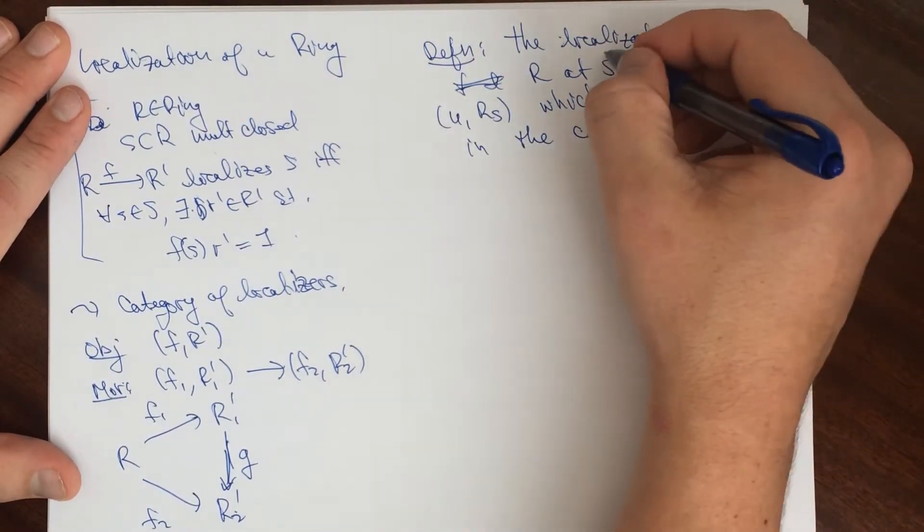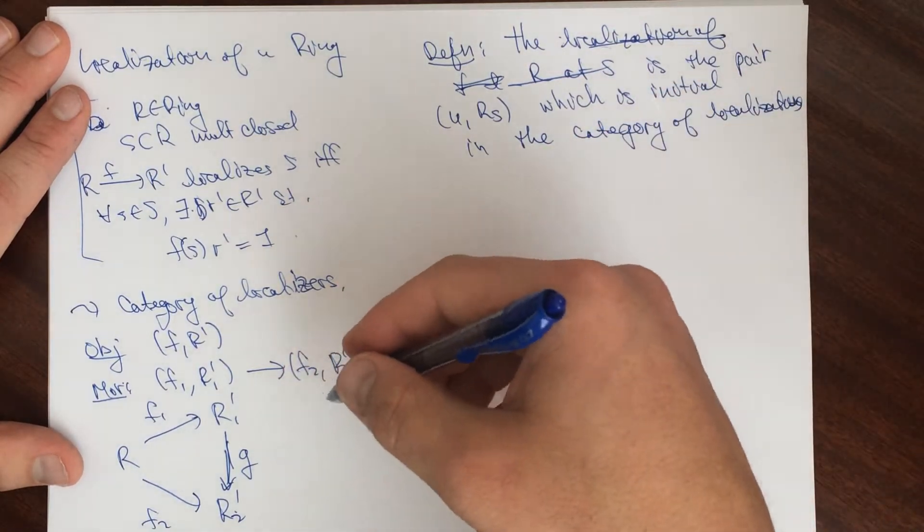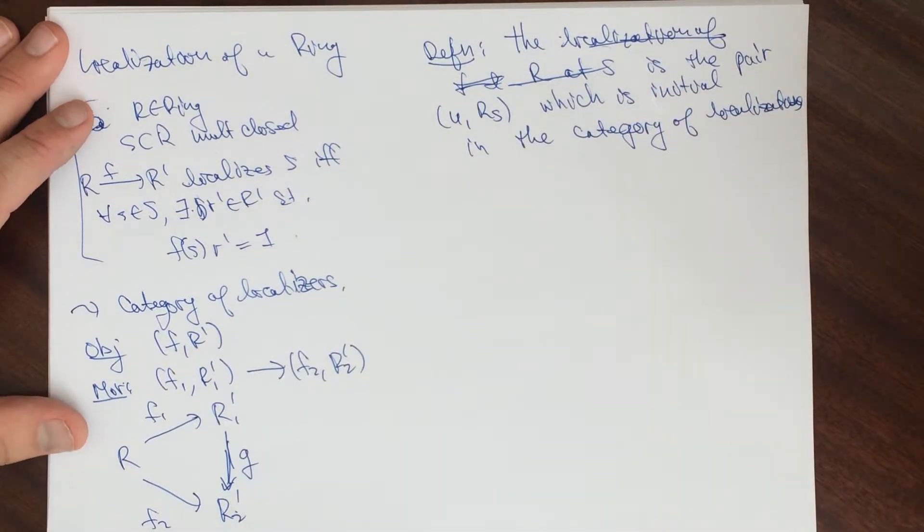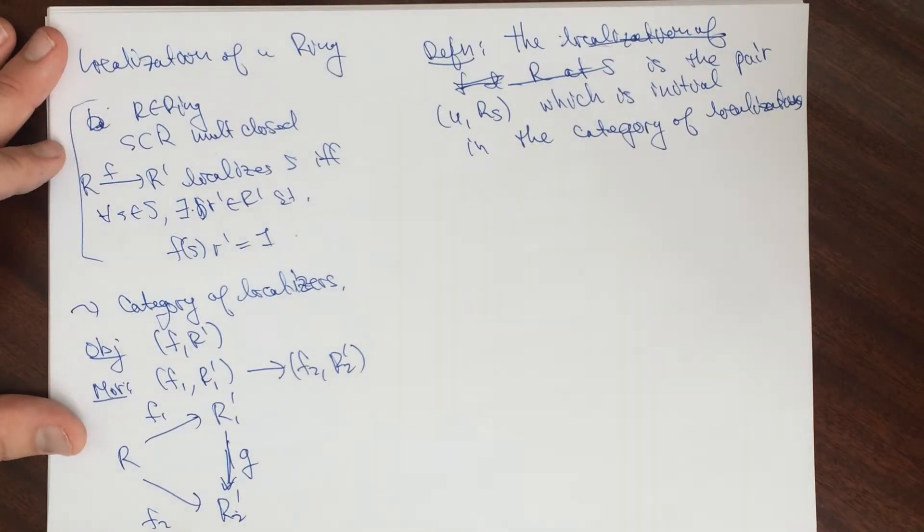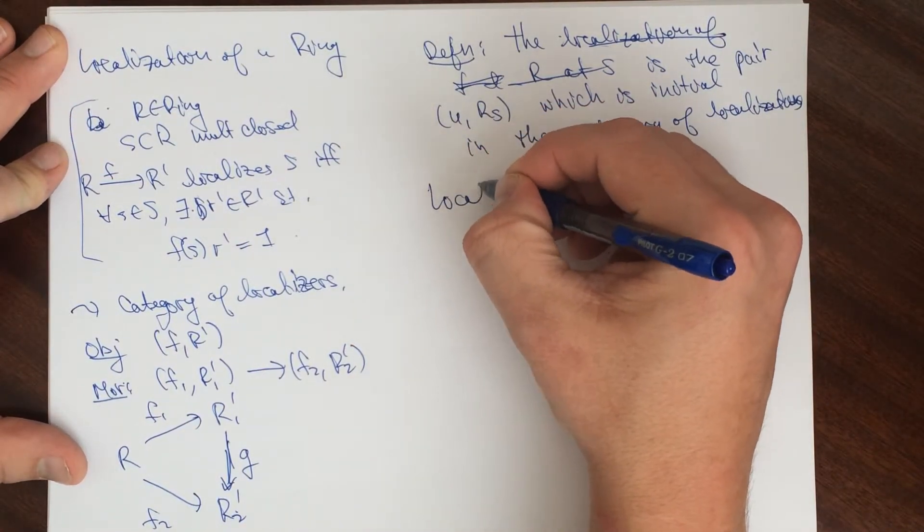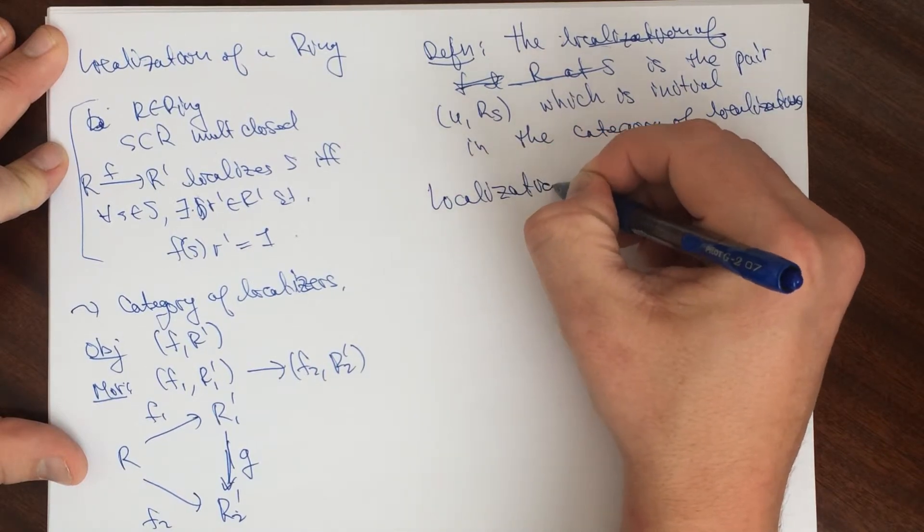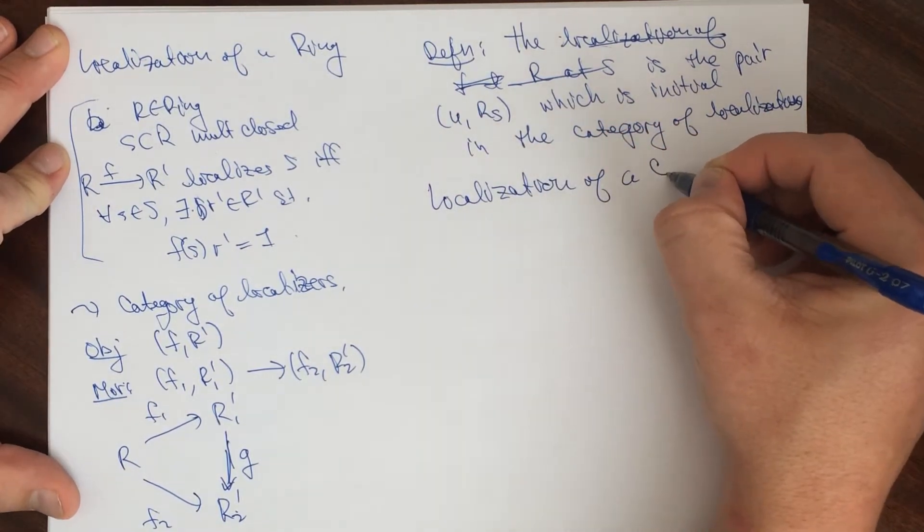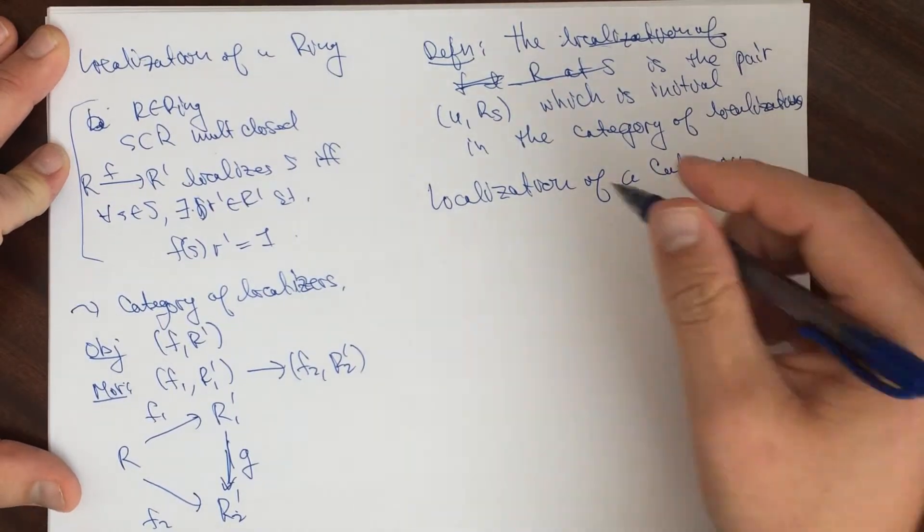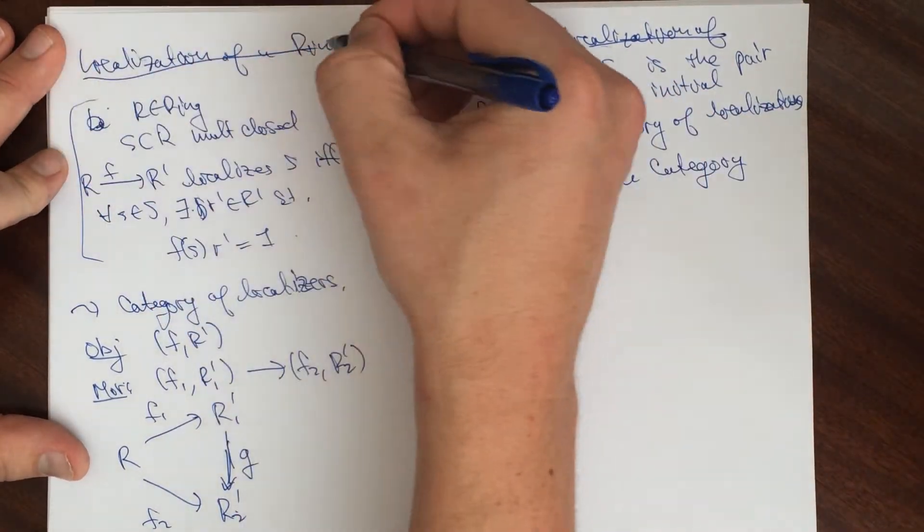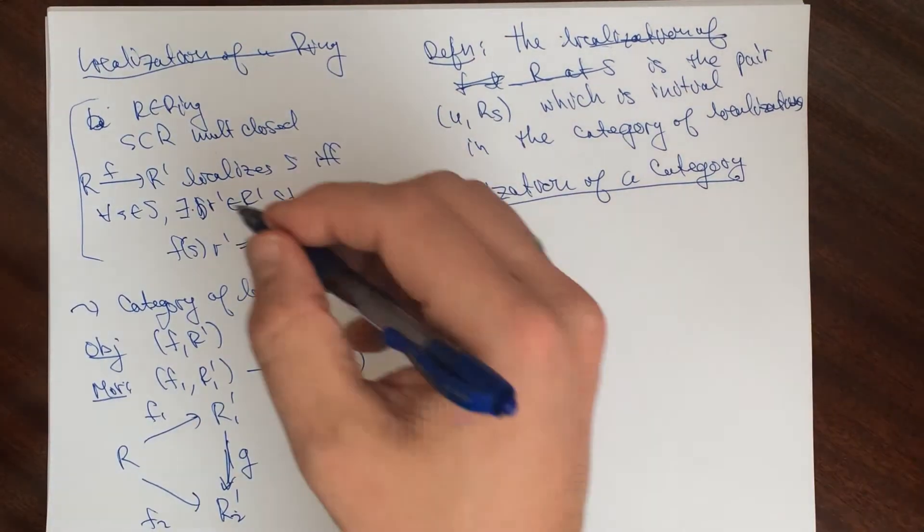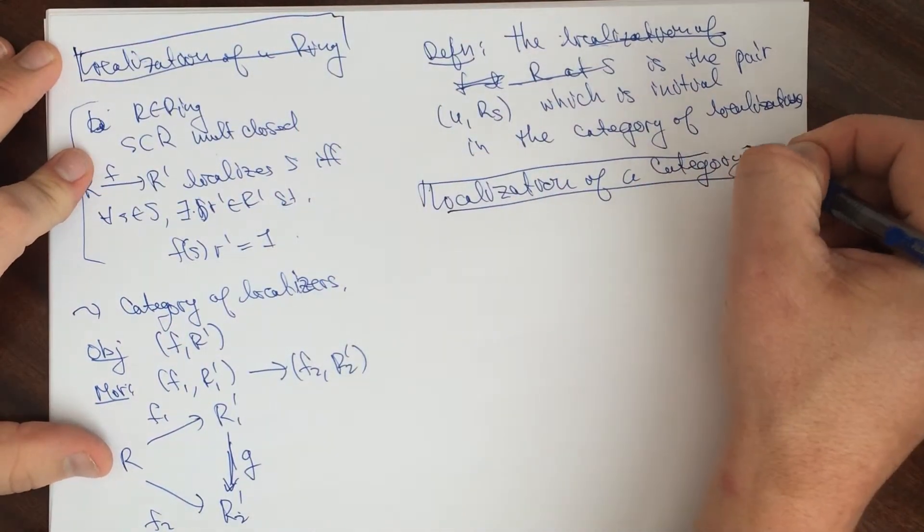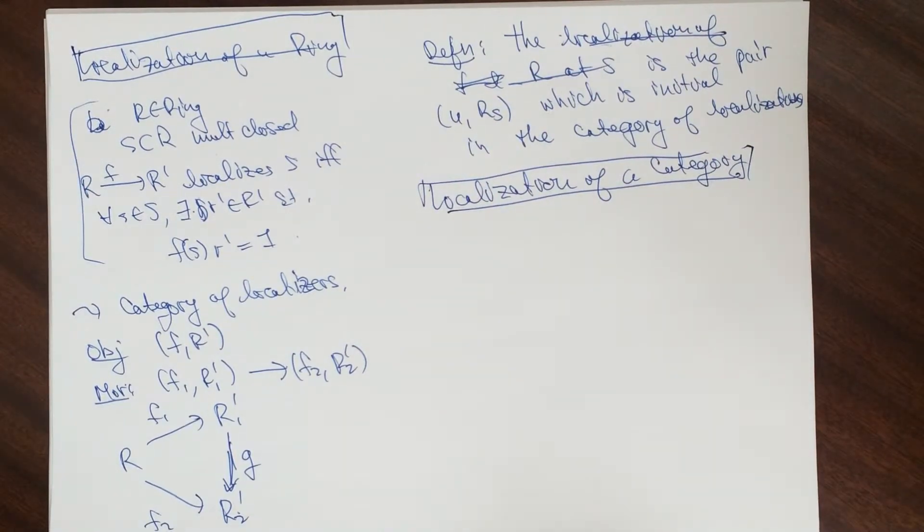It's the initial object in this category. And when it exists, it's unique up to isomorphism. So to do this for a category. In localization of a category.